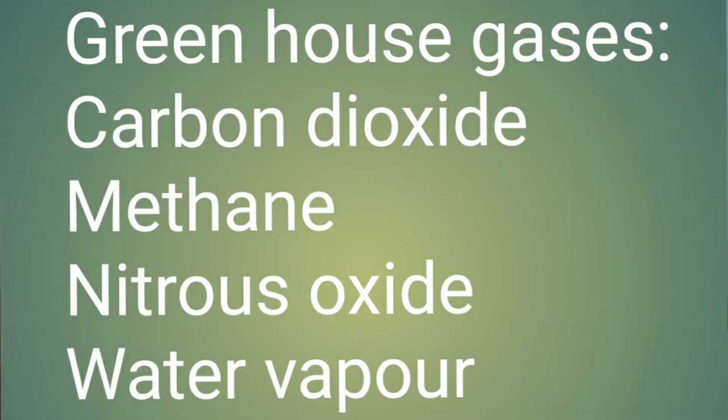Number two, we have aerosols. Number three, we have changes in land use. Aerosols are droplets of dust, soot, and smoke that accumulate in the atmosphere — they are also harmful to our climate. Greenhouse gases are gases that absorb and emit radiation, and they include carbon dioxide, methane,